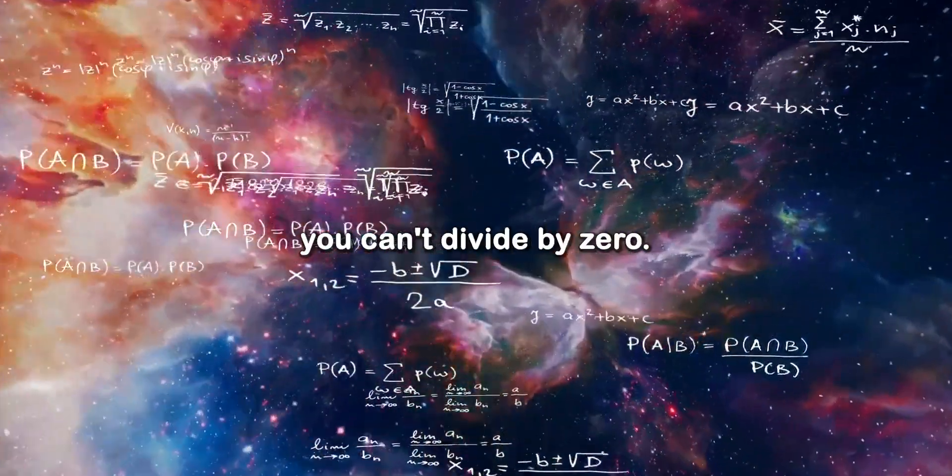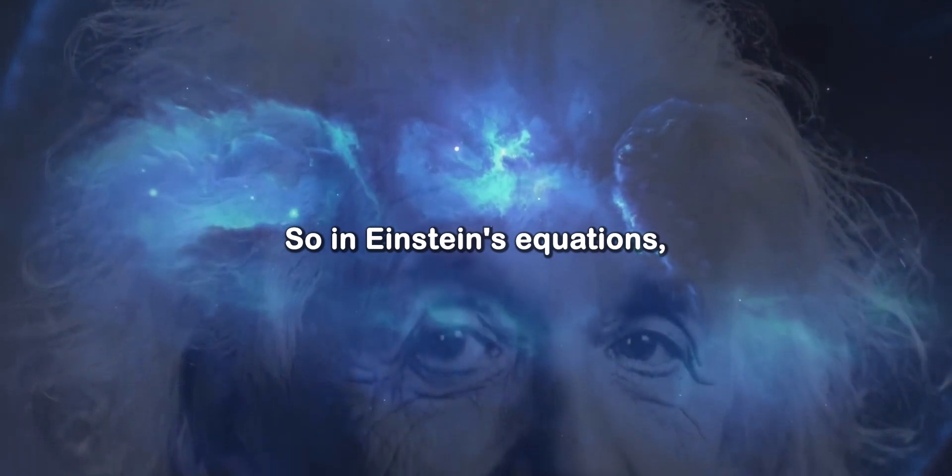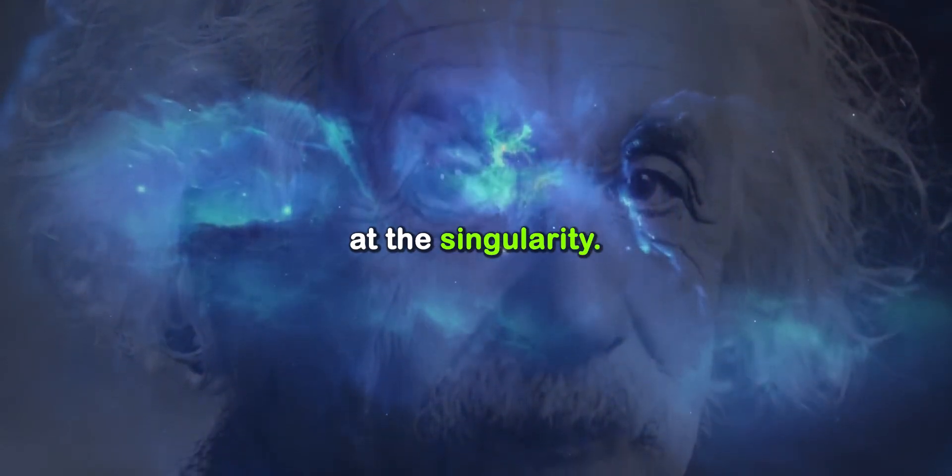Remember in math class, you can't divide by zero. It's not defined or not allowed. So in Einstein's equations, we're dividing by zero at the singularity.